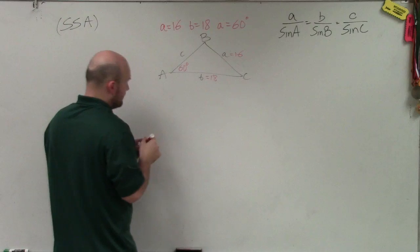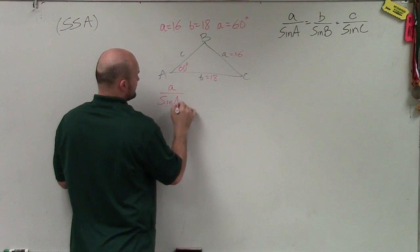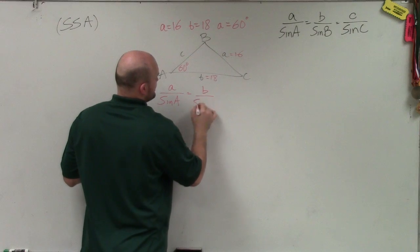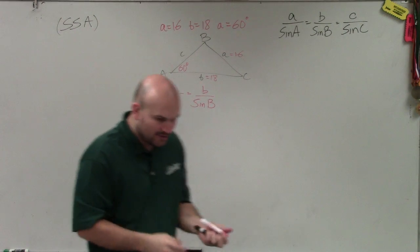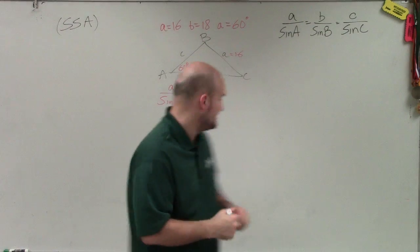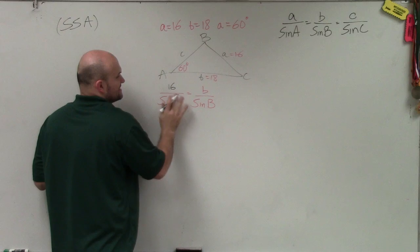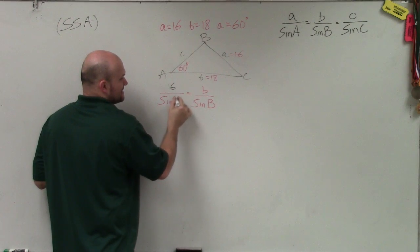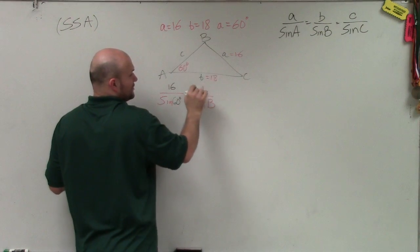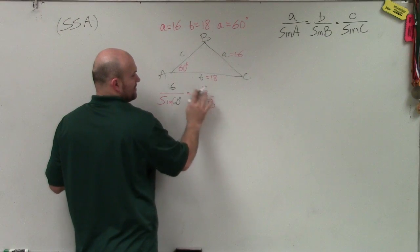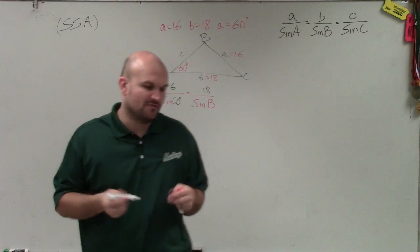I'll create that ratio: a over sine of A equals b over sine of B. The value of a is 16, the sine of A is sine of 60 degrees, and I don't have my value for angle B, but I do have b, which is 18. So now I just need to solve for B.